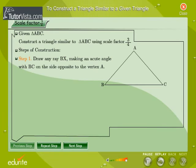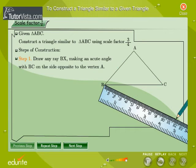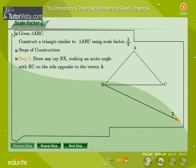Steps of Construction. Step 1: Draw any ray BX making an acute angle with BC on the side opposite to vertex A.